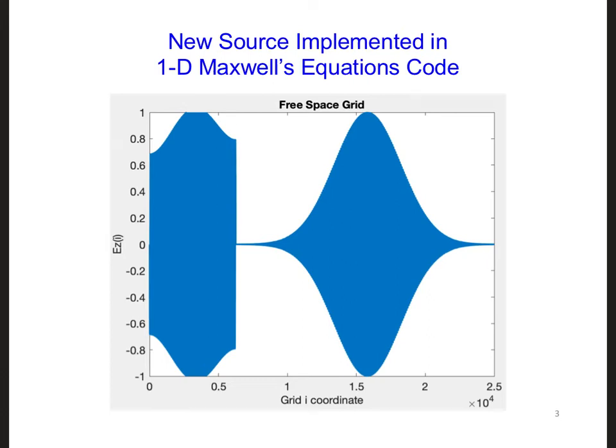You might remember that we are not updating the electric field component on the left edge of the grid. Specifically, ez at location i equal 1 is initialized to 0, and then it also stays 0 because we never update it.